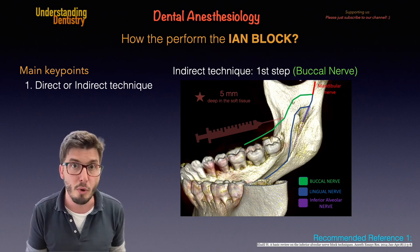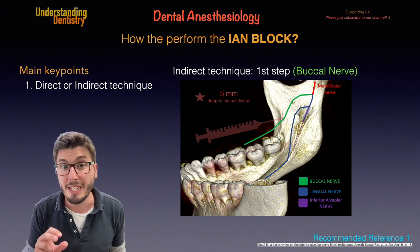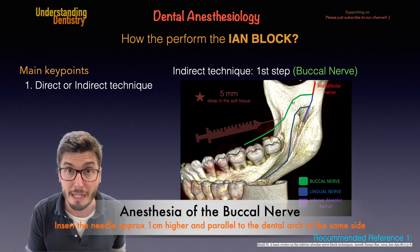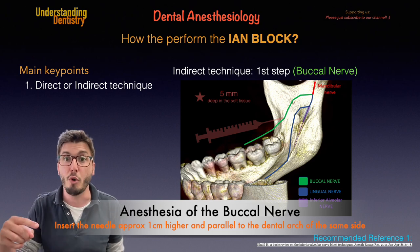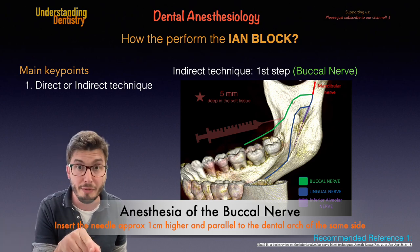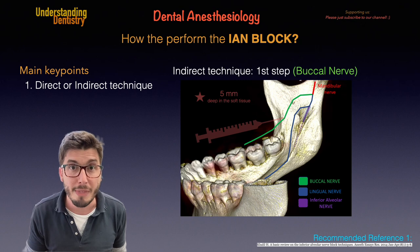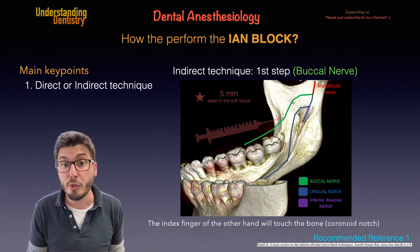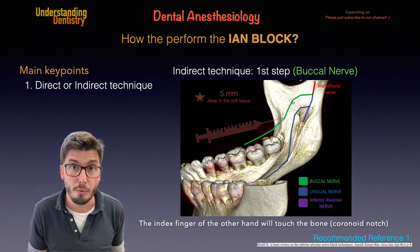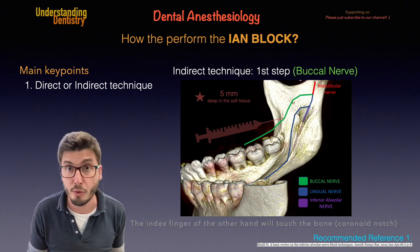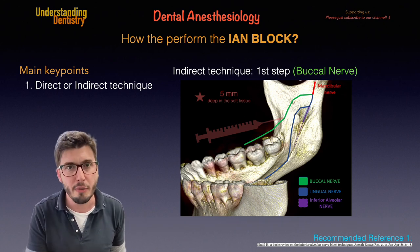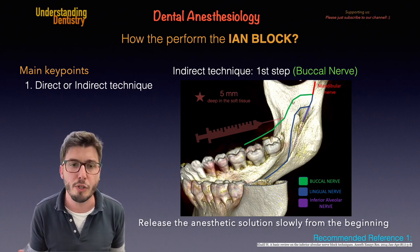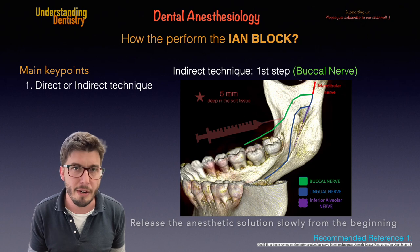The first step is to go for the buccal nerve. We need a penetration depth in the soft tissues of five millimeters. You go parallel to the dental arch of the same side, usually one centimeter vertically distant from the occlusal line, then use your finger to detect the bone lateral to the area, insert your needle five millimeters, and you'll be targeting the buccal nerve — the one that goes to the soft tissues of the buccal area of the mandible.